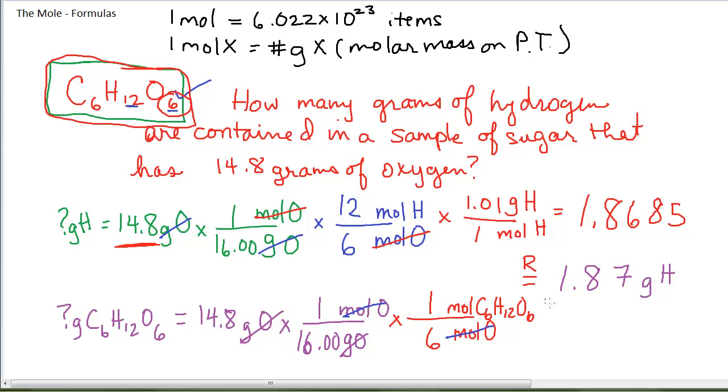I'm trying to find grams. One more step: moles of C6H12O6 on bottom and grams of C6H12O6 on top. This is the molar mass, 180.18. All I have left to do is to punch it in my calculator. I will need to round the answer correctly.